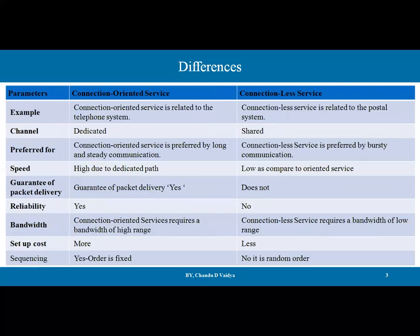An example of connection-oriented service is the telephone system — a fixed path of the telephone line is established at the beginning and then used for calling. Connectionless service is related to the postal system, where routing changes dynamically. In connection-oriented service the channel is dedicated — you are the owner of that channel. In connectionless service the channel is shared among multiple packets.